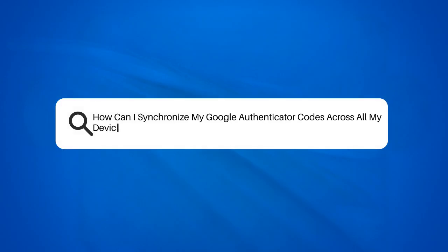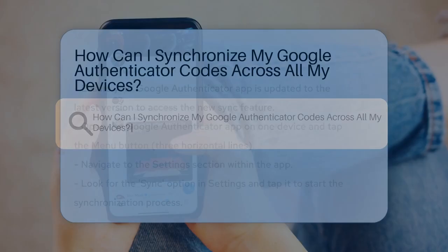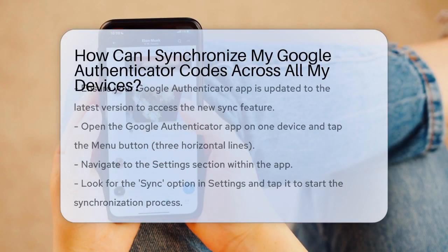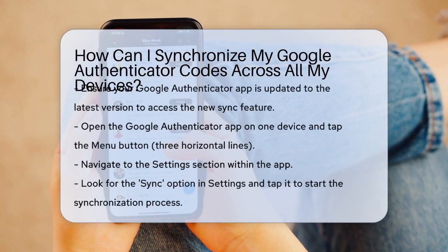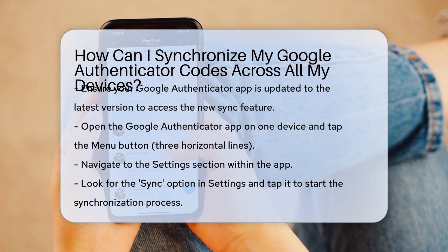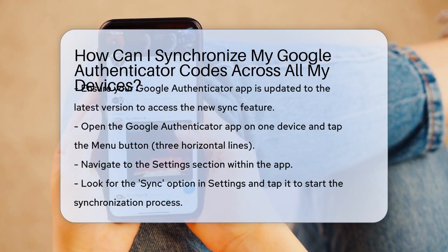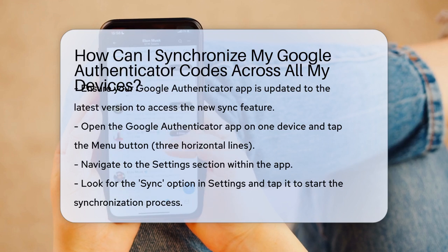How can I synchronize my Google Authenticator codes across all my devices? To start, make sure your Google Authenticator app is updated to the latest version. This update introduces the new sync feature that allows you to access your two-factor authentication codes from any device.